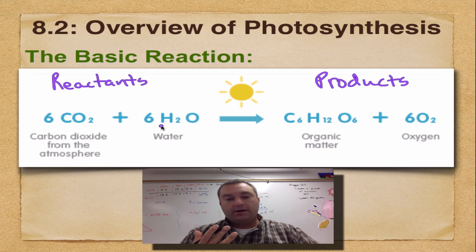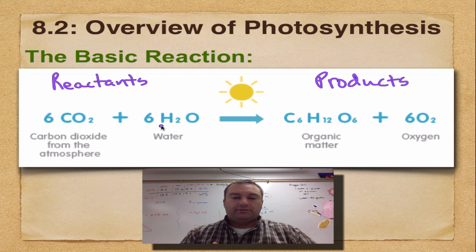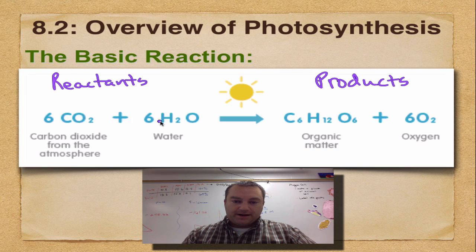You get it on our planet through precipitation, evaporation, living things breathing it out, so there's plenty of water around unless you're in a desert. And these two are going to be combined together with light.